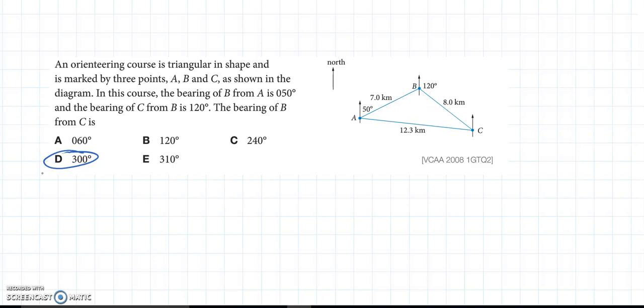Alright, so an orienteering course is triangular in shape and is marked by three points A, B and C. In this course, the bearing of B from A is 50, the bearing of C from B is 120, the bearing of B from C is? Note, it's a question 2 in an exam, so it should be relatively straightforward. The key thing about these bearings questions is the word from, note how often it appears.